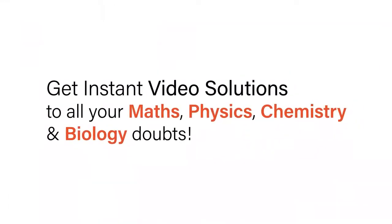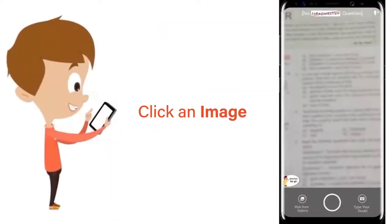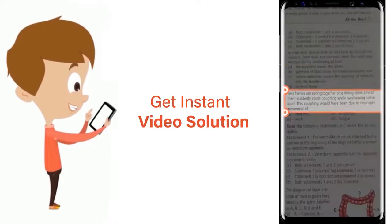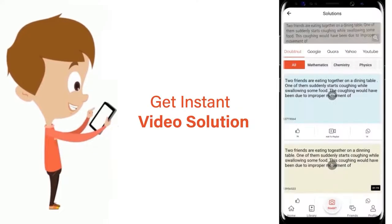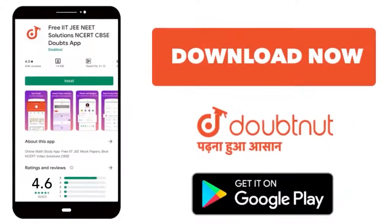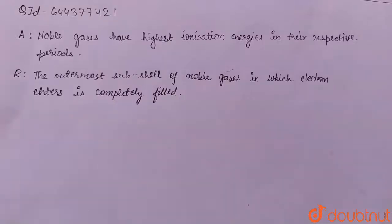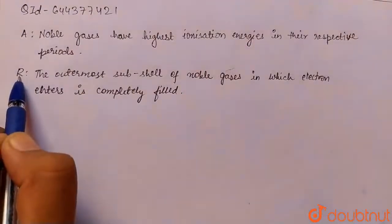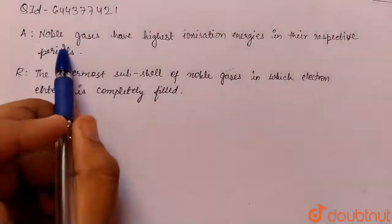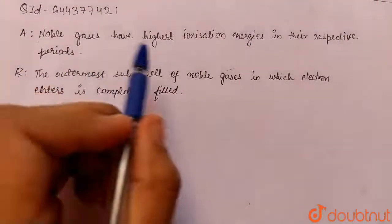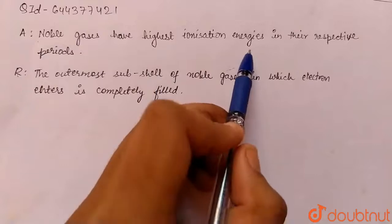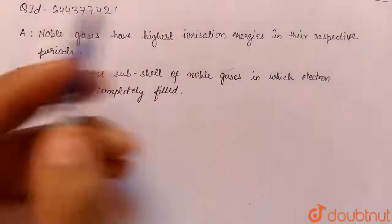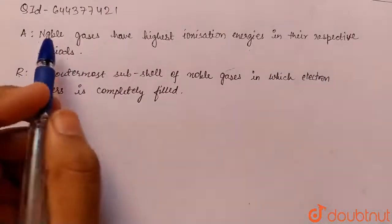With DoubtNut, get instant video solutions to all your maths, physics, chemistry and biology doubts. Just click the image of the question, crop the question, and get instant video solution. Download the DoubtNut app today. Hello students, today's question is an assertion-reason type question. The assertion is: noble gases have highest ionization energies in their respective periods.